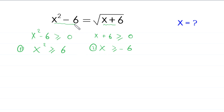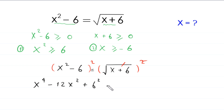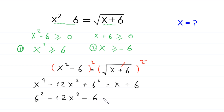We use these two conditions to check the solutions. Now let's continue by squaring both sides: x squared minus 6 equals the square root of x plus 6. Taking the square of both sides, the square root cancels out, and x squared minus 6 whole squared becomes x to the power 4 minus 12 times x squared plus 36, equal to x plus 6.